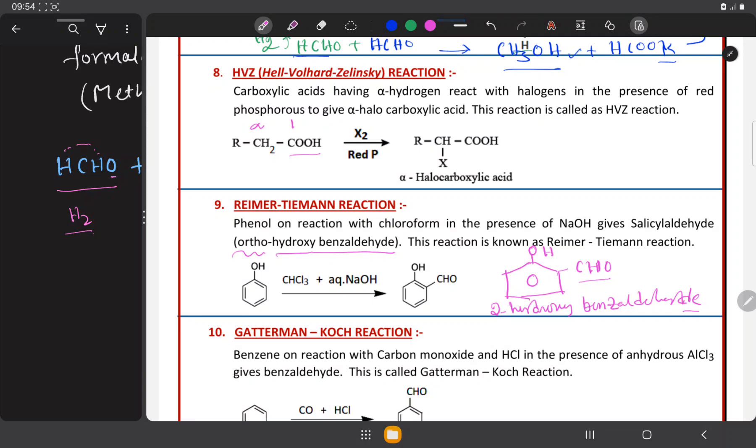Whereas in Kolb's reaction, we have got 2-hydroxybenzoic acid in the place of CHO, we have got COOH. I think you have remembered that. So, if you can go through Riemann-Thiemann reaction and Kolb's reaction together you can easily understand the difference.